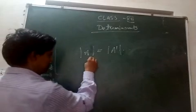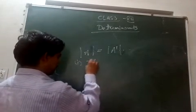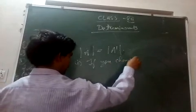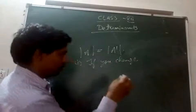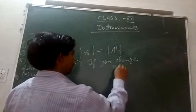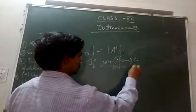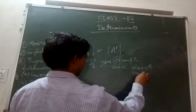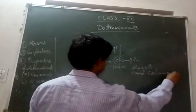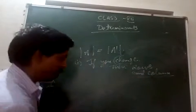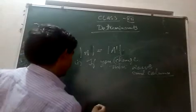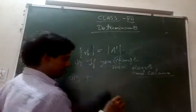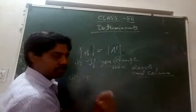So that is the first law: if you interchange rows and columns, you get the same value of the determinant. The second law: if any two rows or any two columns are equal, then the value of the determinant is zero.